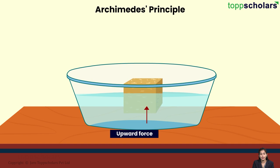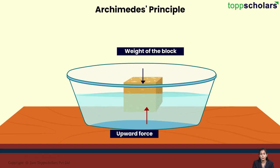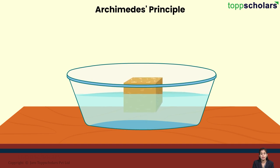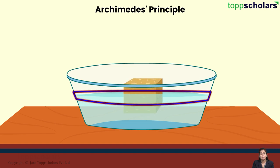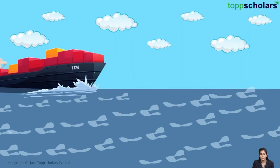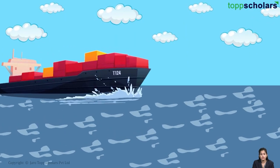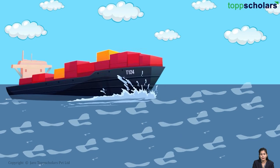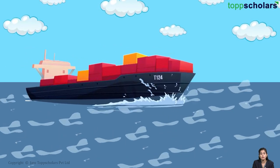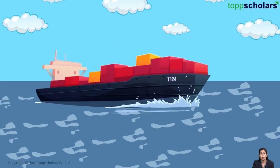When the upward force is equal to or greater than the weight of the block, the block will float. This means the block needs to displace enough water to counter its weight and stay afloat. Thus, we can say that to stay afloat, the ship needs to displace enough water to counter its own weight.